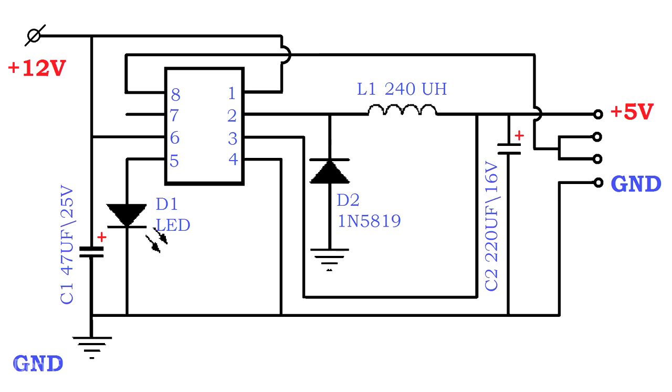This is what the converter circuit looks like. It is classic taken from the datasheet. On the left, 12 volts are supplied to the input of the microcircuit, and on the right, at the output, we get a stabilized 5 volts. The harness consists of only 5 parts.